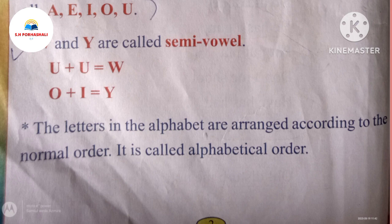The letters in the alphabet are arranged according to the normal order — it is called alphabetical order. Even a lot of them all over — and to just, we say the serial is for that. But I will say it: alphabetical order only. Will say you're not working.